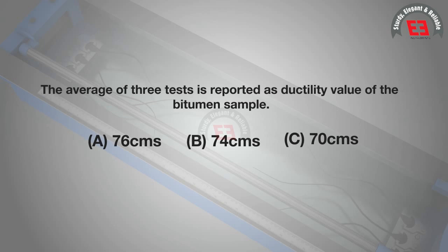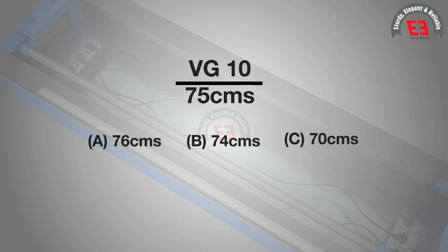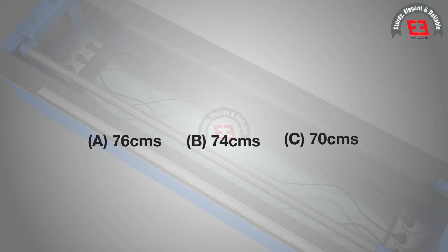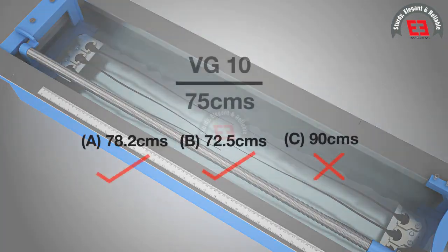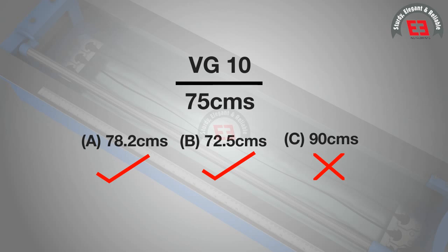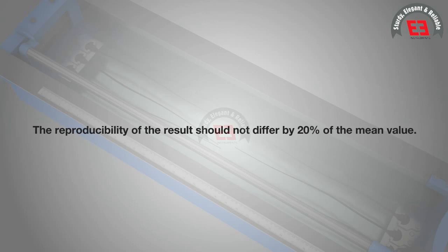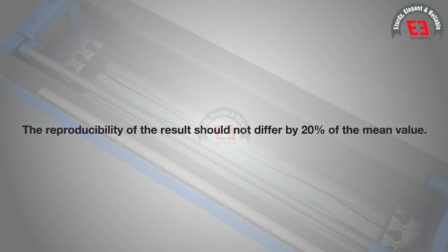Results. The average of three tests is reported as the ductility value of the bitumen sample. The three values should be within plus or minus 5% of the mean value. If the three values are not within the shown limit but the two higher values are within plus or minus 5% of the mean value, then the mean of those two values is considered as the test result. The repeatability of the result should not differ by more than 10% of the mean value. The reproducibility of the result should not differ by 20% of the mean value.